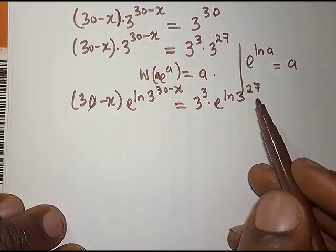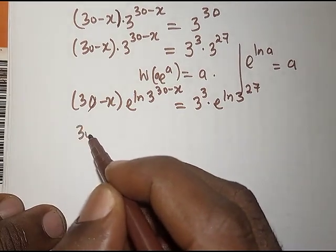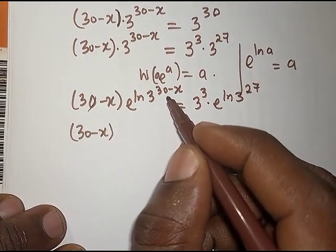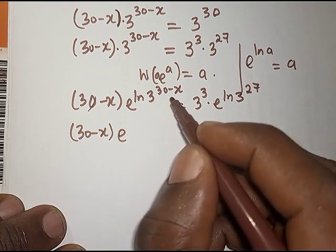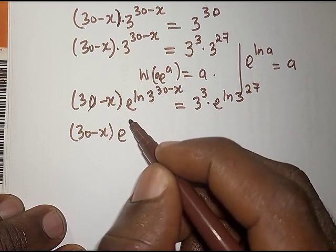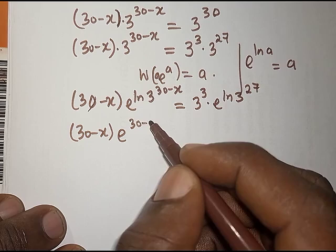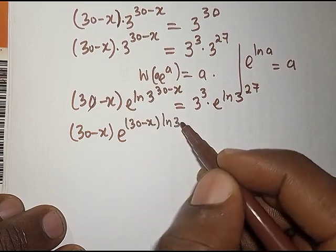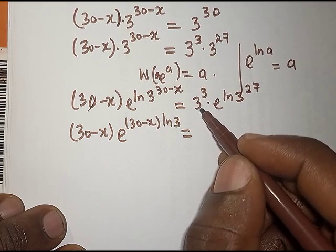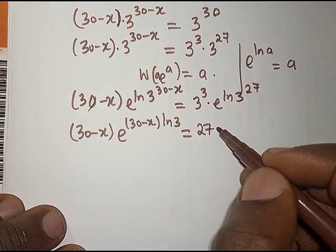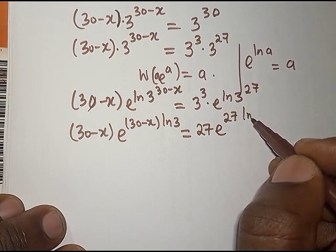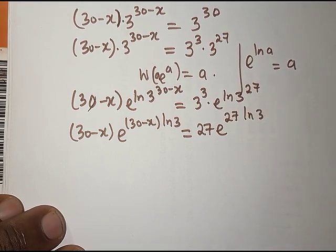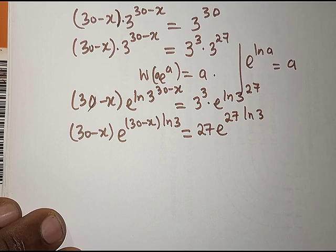Going further, we can rewrite this using exponent rules. We get (30 − x) · e^((30 − x) · ln 3) equals — since 3^3 = 27 — we have 27 · e^(27 · ln 3). This is starting to make sense and we are getting close.